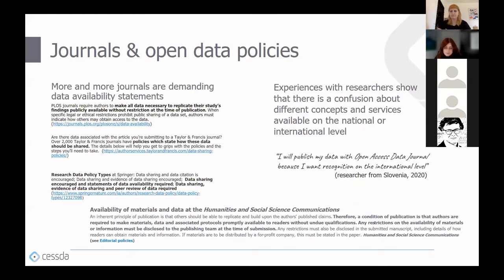Journals can be more or less strict in what they ask from authors. There are journals where authors are obliged to make all data used in the article publicly available at the time of publication, and there are others where data sharing is encouraged but not mandatory. For example, at the Humanities and Social Science Communications Journal, authors are required to make materials, data and associated protocols promptly available to readers, and any restrictions must be disclosed to the publishing team at submission.